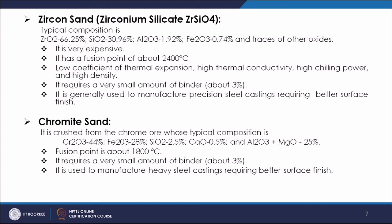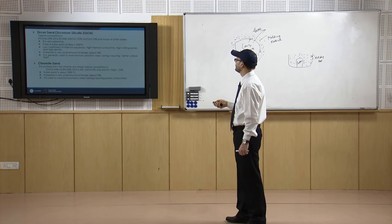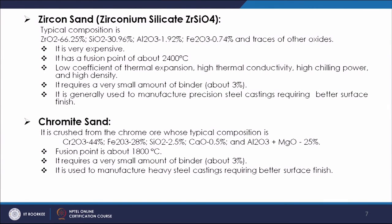Then there is chromite sand, from chrome ore with composition: Cr₂O₃ at 44%, Fe₂O₃ at 28%, SiO₂ at 2.5%, and a mixture of aluminum oxide and magnesium oxide at 25%. This chromite or chrome-magnesium oxide sand has a fusion point of 1800°C. A very small amount of binder is used, and it is used for manufacturing heavy steel castings requiring better finish.